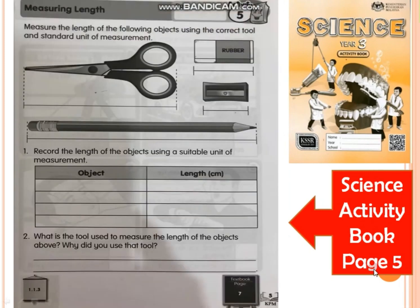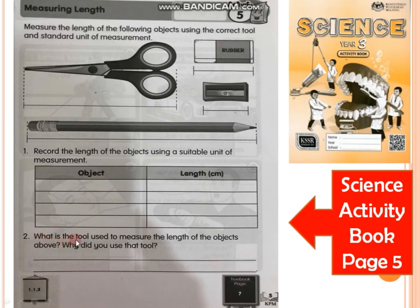You also have to do page 5. Measure the length of the following objects using the correct tool and standard unit: scissor, rubber, sharpener, and pencil. Record the measurements in the table — write the name of the object and the length. For number 2, decide what standard tool you use to measure all these objects. The answer is ruler. Then answer: why did you use that tool?